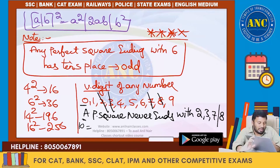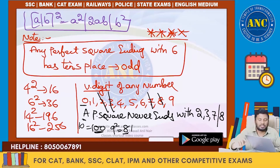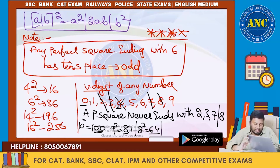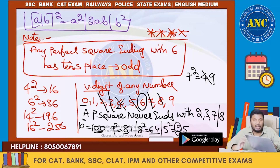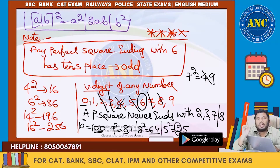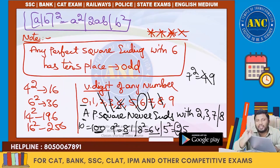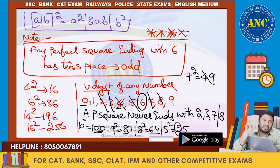If it ends with 0: 10 squared is 100, ending with an even number of zeros. If ending with 1: 9 squared is 81, tens place is even. If ending with 5: 5 squared is 25. If ending with 9: 7 squared is 49, tens place is even. So only when the unit digit is 6 will the tens place be odd. The reverse is also true: if a perfect square has an odd tens digit, the unit digit must be 6.